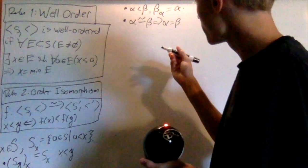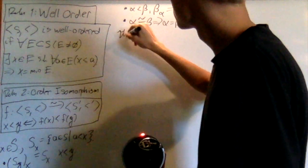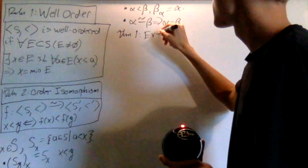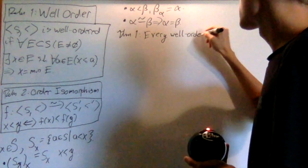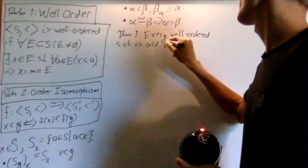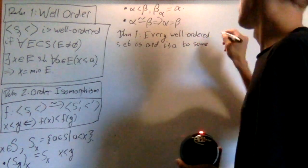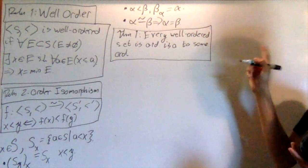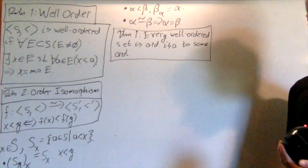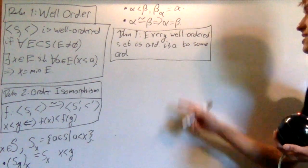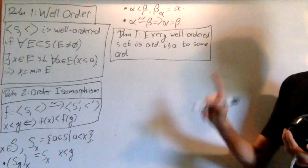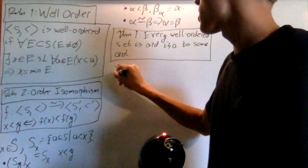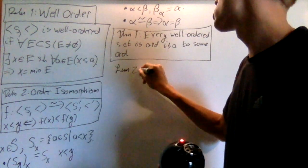The theorem we're going to prove now is that every well-ordered set is order isomorphic to some ordinal. This is the connection I was talking about — every single well-ordered set you could possibly pick is order isomorphic to some ordinal. I'm going to prove a lemma first that will make this super easy.